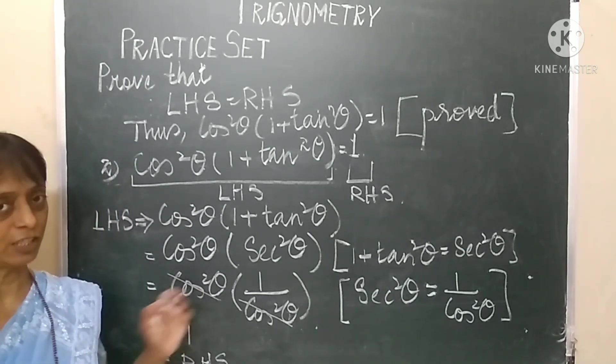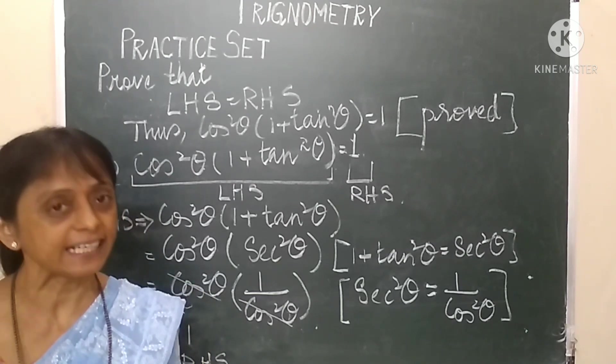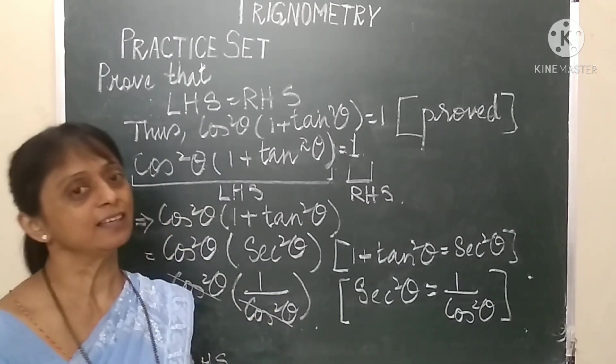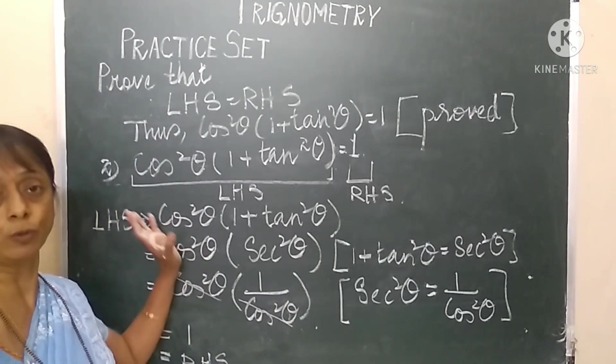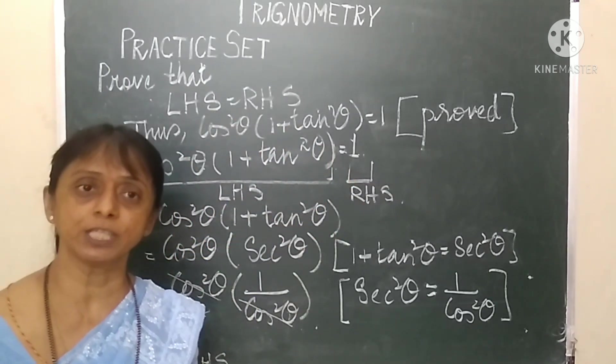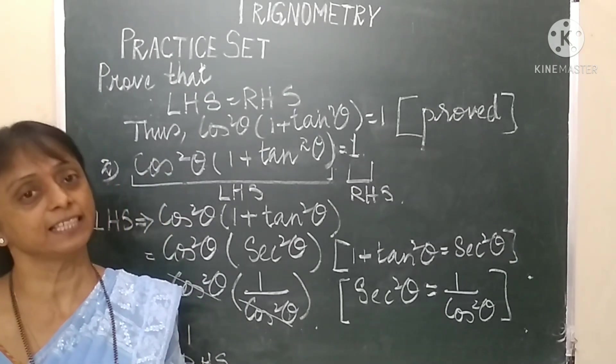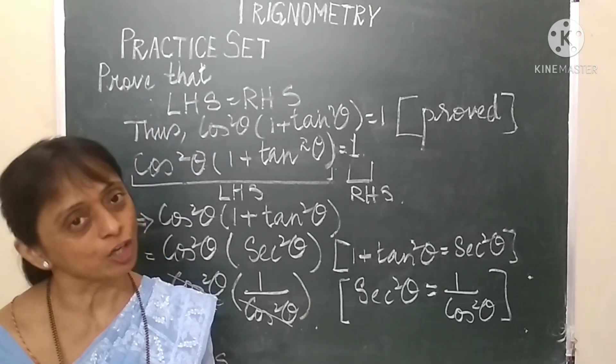It is very easy to solve such problems provided we know our basic rules and identities. We proved both using trigonometric identities and the multiplicative inverses of basic functions sine and cosine. Let's recall the three key identities: first, sin²θ + cos²θ = 1; second, 1 + tan²θ = sec²θ; and third, 1 + cot²θ = cosec²θ.